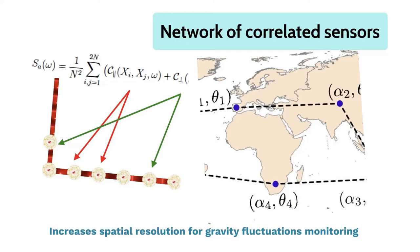Network of correlated sensors can also be created by interrogating many clouds of atoms with the same laser, but this can only be done at short scales and cannot be deployed over large territories.